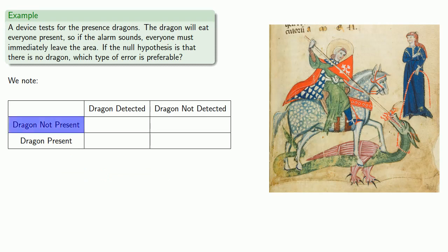So, if there's no dragon present, but the alarm detects a dragon, that's a false alarm.